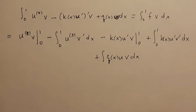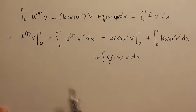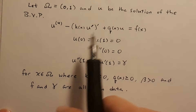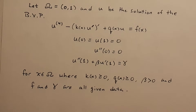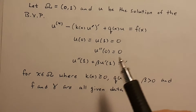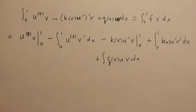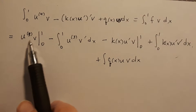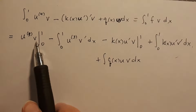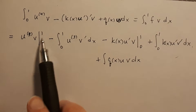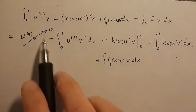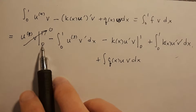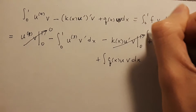Now we apply boundary conditions. Looking back at the original problem, there is no information given about the third derivative. Since we don't have information about u''', we need to impose a condition on our test function v. We're going to set v(1) = 0 and v(0) = 0, so this whole boundary term goes to 0. And since v(1) = 0 and v(0) = 0, the other boundary term from the k term will also vanish.